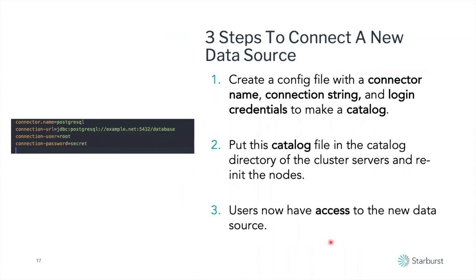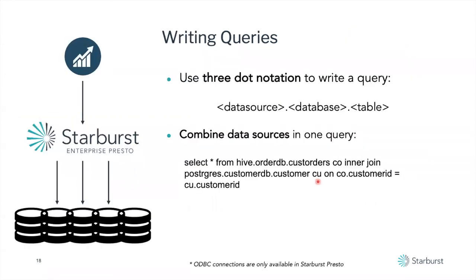When you connect to a new data source — and we're going to go into a couple of these files in a little bit — you usually just need four lines. What you're looking at is a Postgres connection. You just specify the connector name, the connection URL — this is the standard connection you would use in anything connecting to your Postgres server — and naturally the username and password. Our Enterprise Edition puts this in a vault if you want. But once you do that and restart the cluster, you have access to an entirely new data source and people can start querying it.